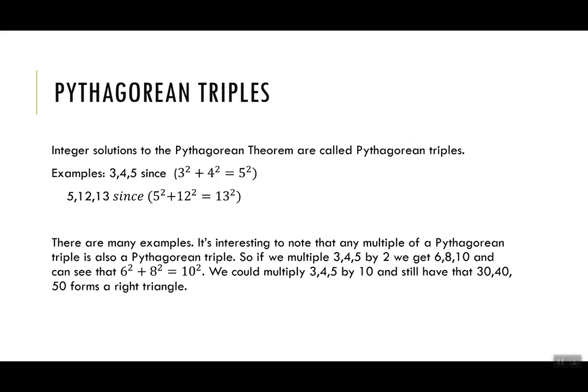It may be of interest for you to know that there are things called Pythagorean triples. These are integer solutions to the Pythagorean Theorem, like the 3, 4, 5 that we just did. Another one is 5, 12, 13, that 5 squared plus 12 squared is equal to 13 squared.